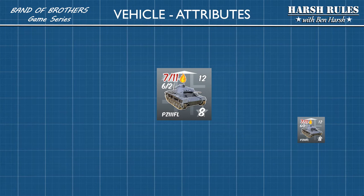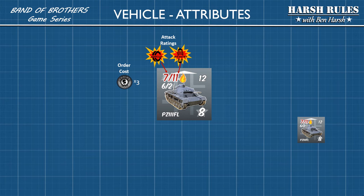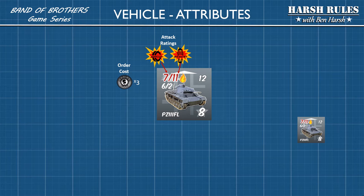Now let's take a look at the vehicle attributes. Vehicles, just like guns, cost three orders on the operations range. For attack ratings, the number before the slash is the vehicle's offensive capability against other vehicles. The number after the slash is the offensive capability against infantry.